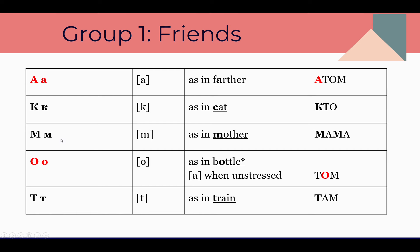Now we know М. The next is О, as in 'bottle.' For example, the name Tom — Т, О, М — Tom. Now we know the О letter. The next is Т, sound 'T,' as in the word 'train.' The word там means 'there.' We can ask: Кто там? — Who is there?